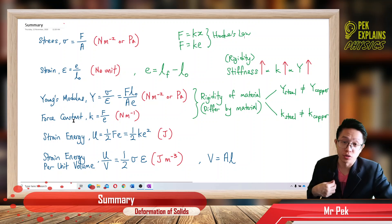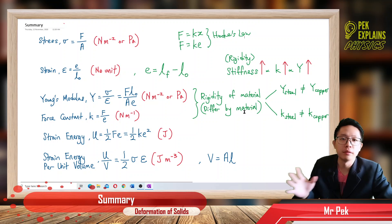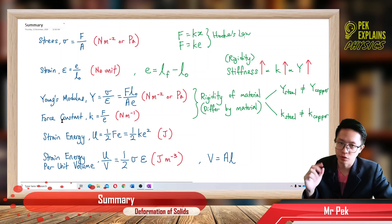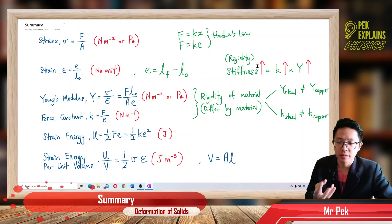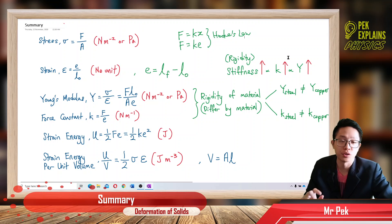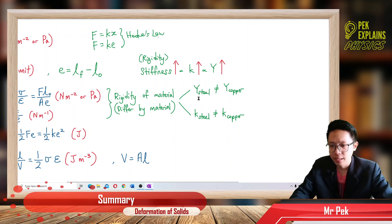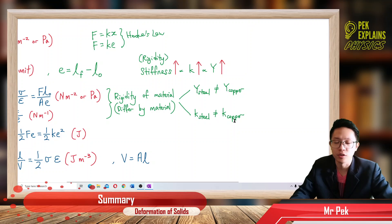Young's modulus and force constant both differ by material — different material means different Young's modulus and different force constant. Basically they show the rigidity, stiffness, toughness, or hardness of the material. The higher the rigidity or stiffness, the higher the force constant and the higher the Young's modulus. For example, steel and copper have different Young's modulus and force constant because they are different materials.